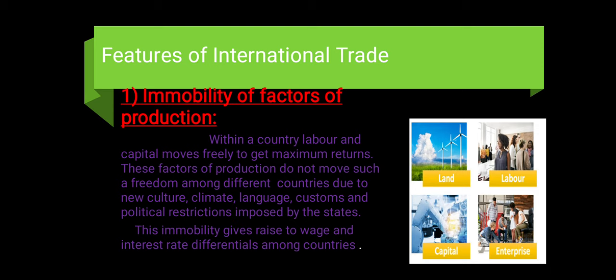Next we discuss about the features of international trade. The first point is immobility of factors of production. Within a country, labor and capital move freely to get maximum returns. These factors of production do not move with such freedom among different countries due to differences in culture, climate, language, customs, and political restrictions imposed by the state. These immobilities give rise to wage and interest rate differentials among countries.